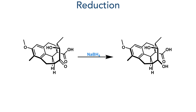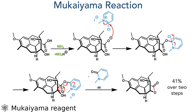In the next step the ketone was reduced using sodium borohydride, and the unpurified crude material was then taken forward to a Mukaiyama esterification. The carboxylic acid is firstly activated with triethylamine and this attacks the Mukaiyama reagent. The resulting activated ester then undergoes intramolecular attack from the hydroxyl group, eliminating methylpyridone and forming the target ester with a 41% yield over two steps.